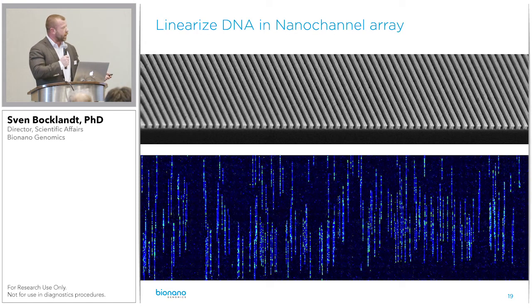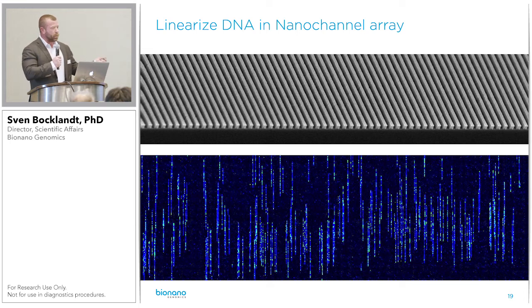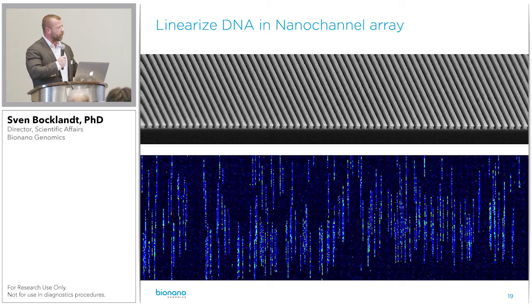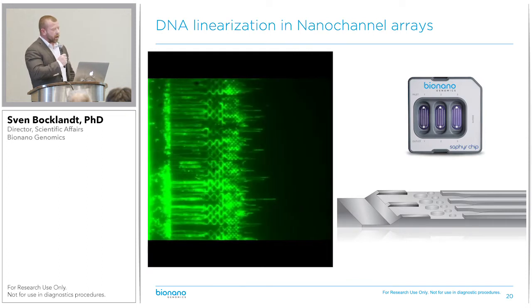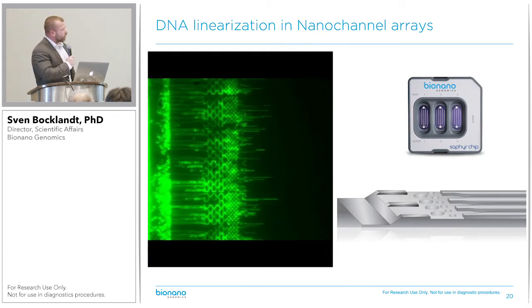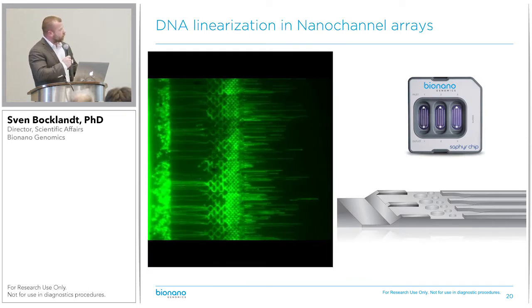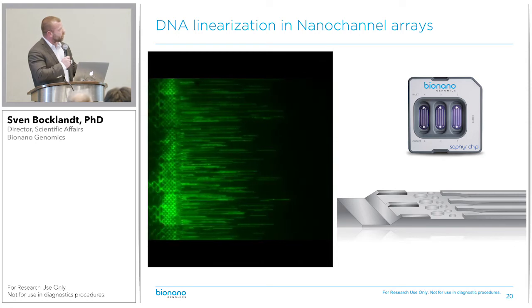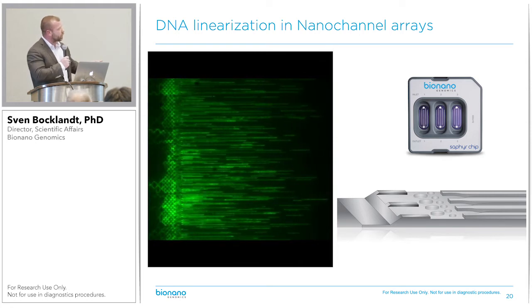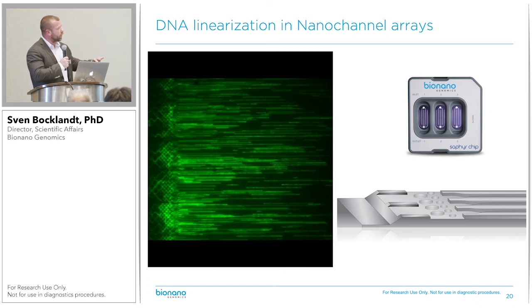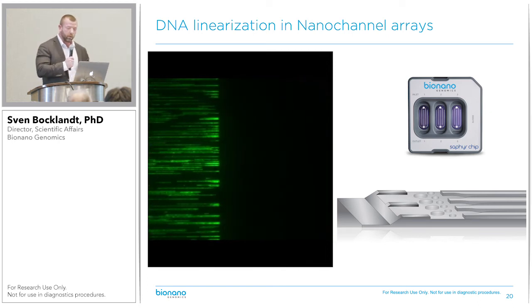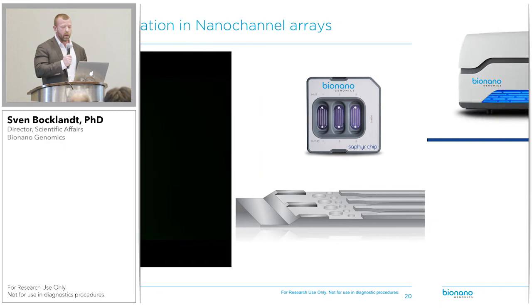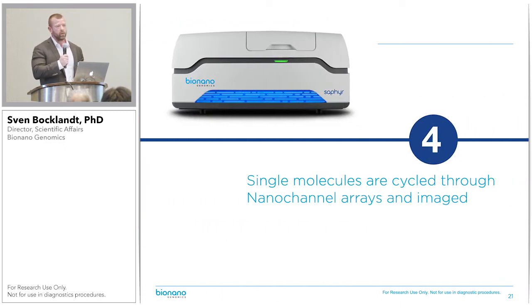It looks like this. You can easily see how each of these molecules sits in these nano-channels. The blue signal is the backbone stained with an intercalating dye, and in green you see the specific label site that is fluorescently labeled. When the DNA moves through the chips, you see the Gaussian coils of DNA moving through pillars, gently unwinding and then moving into the nano-channels where the molecules are imaged. We do this over and over again.